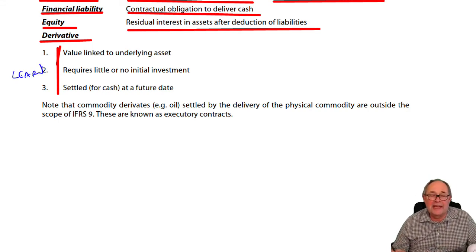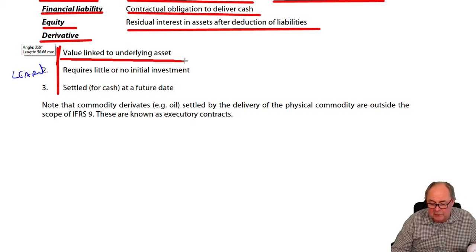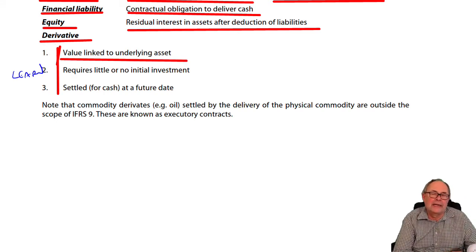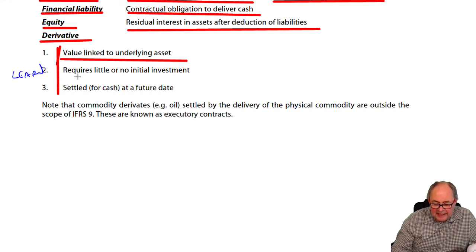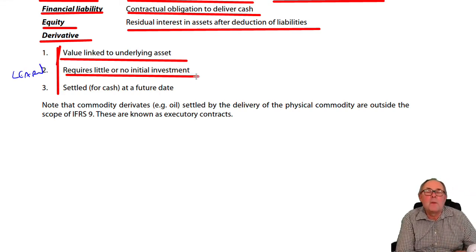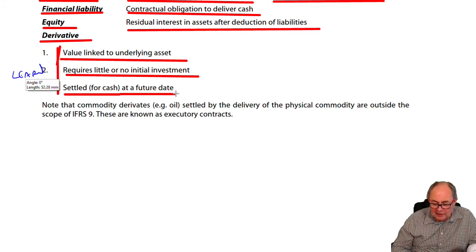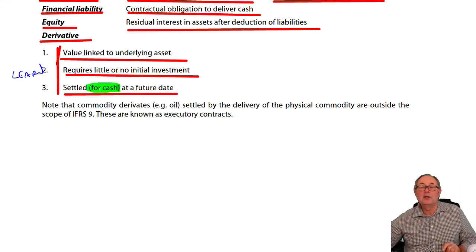The definition doesn't say it's an option or future — we'll talk about that distinction later. It simply says it's something whose value is linked to something underlying: an option to sell shares, a future on sausages, a swap on interest rates. The value of the derivative is linked to something else — interest rates, share price, the price of potatoes. Secondly, when you go into derivative trading you don't need to spend much money, so it requires very little investment at the start. Finally, it's settled at a future date for cash.